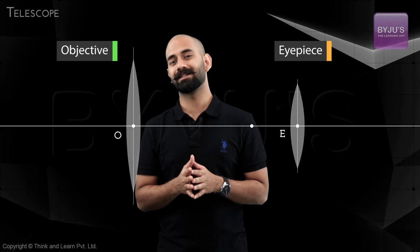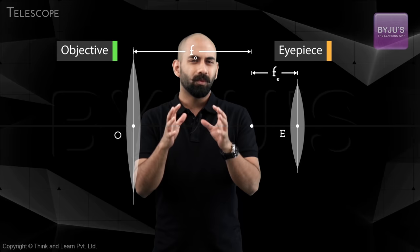When you use them, you suddenly feel like the object has come much closer to you. How exactly does this work? Telescopes are also made of two lenses — two biconvex lenses — one called the objective and one called the eyepiece. The only difference here is that the objective has a larger focal length and the eyepiece has a smaller focal length. We'll come to why in some time.